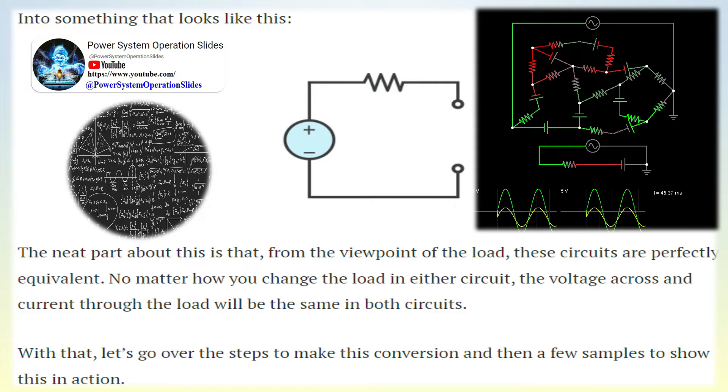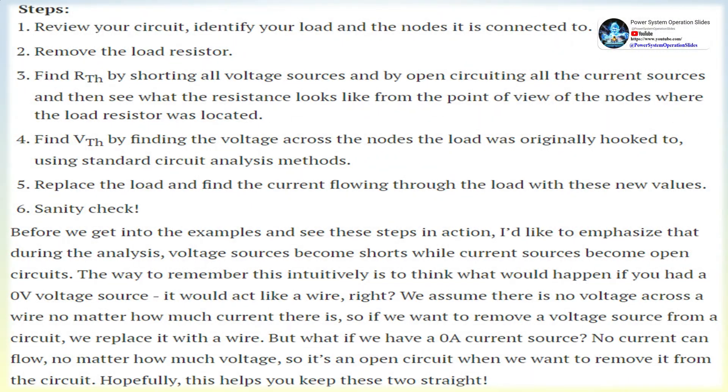Thevenin circuits can be calculated across any two nodes of a circuit. The circuit consists of a Thevenin voltage source VTH and equivalent Thevenin resistance RTH, or ZTH in the case of capacitors plus inductors present. VTH is obtained at the open-circuited terminals AB and RTH is obtained with all voltage sources replaced by shorts.